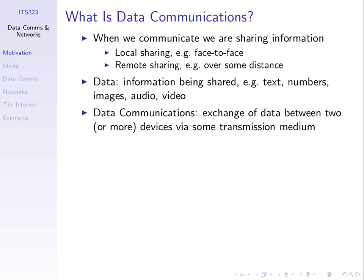Not just between humans — we'd also like computers or computing devices to be able to share information. Data communications: the information being shared, whatever that is. Examples include text, numbers, images, audio and video — the main things we want to share between computing devices. For example, if you want to make a voice call over the internet, voice over IP, the information is audio — your voice. Data communications is the exchange of data between two or more devices via some transmission medium.